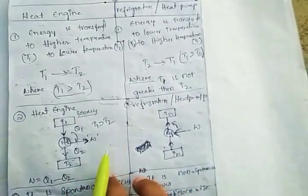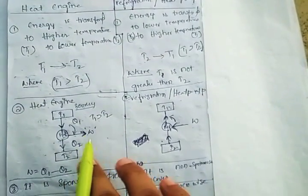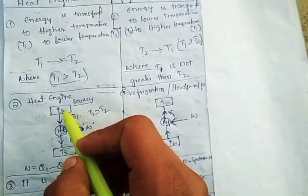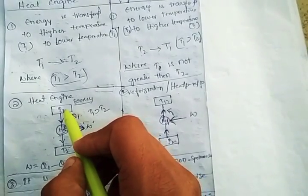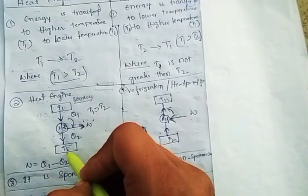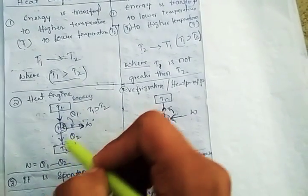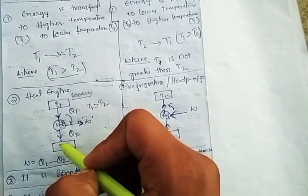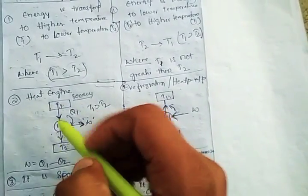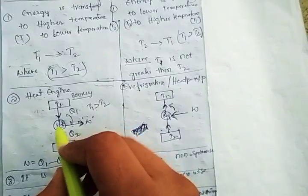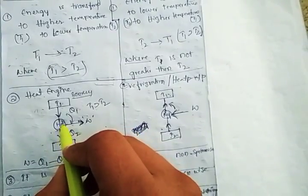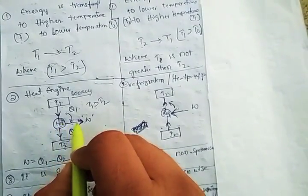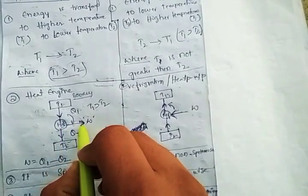We can understand this better with the diagram. Here T1 is the higher temperature and T2 is the lower temperature. When energy is transferred from the higher temperature to lower temperature, work is always taken out by this heat engine.